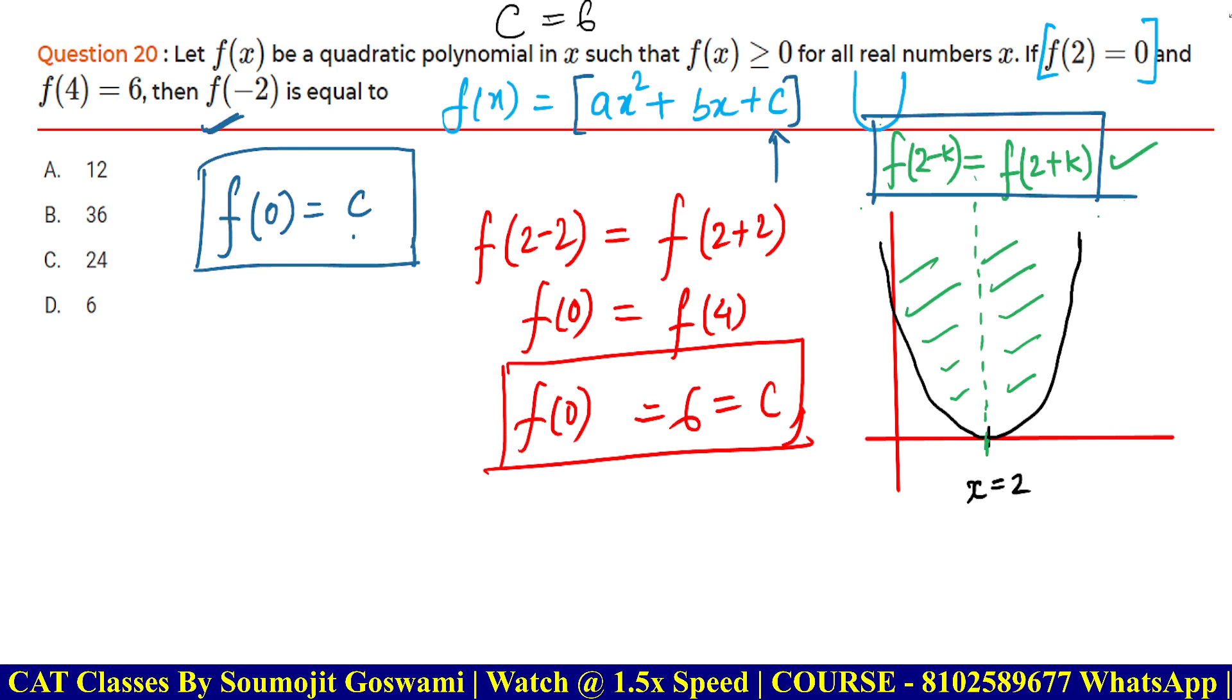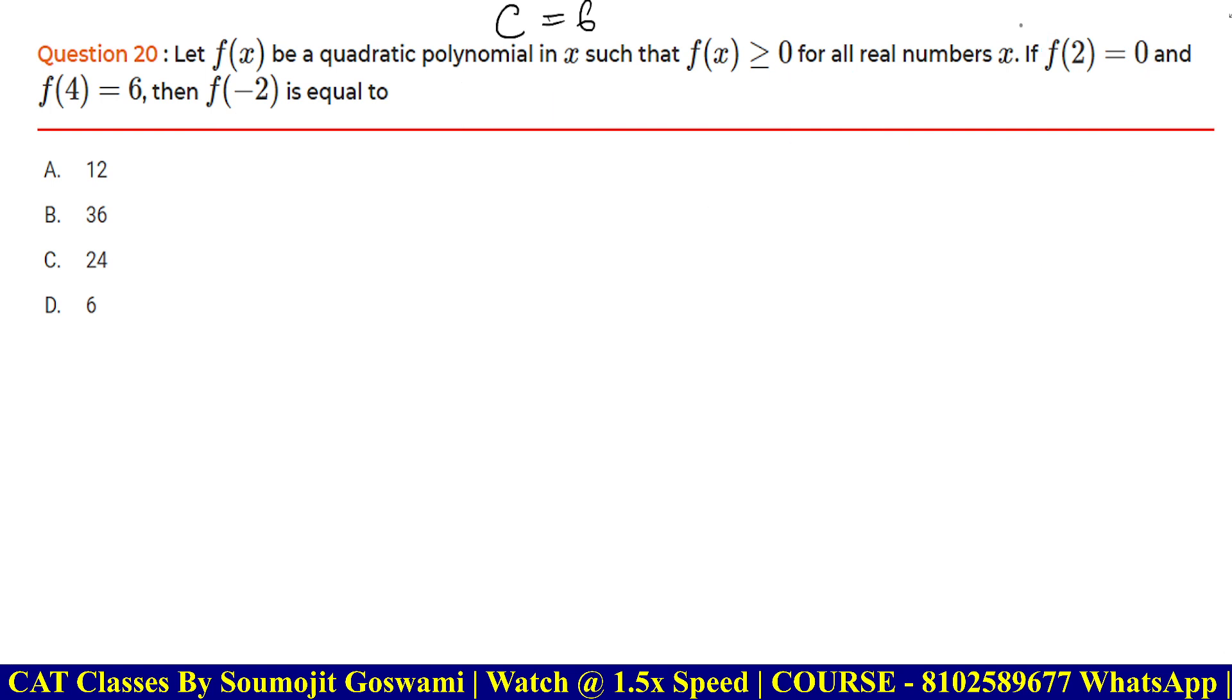Now, I will erase everything. If you want to probably take a screenshot, you can take a screenshot at this point. Now, you need to work with these values, f of 2 and f of this thing. So, let's first of all, use the value. So, f of 2, what does this mean? ax square. So, 4a plus 2b, that is plus 6. I am directly substituting the value of c and that is equal to 0. It is given.